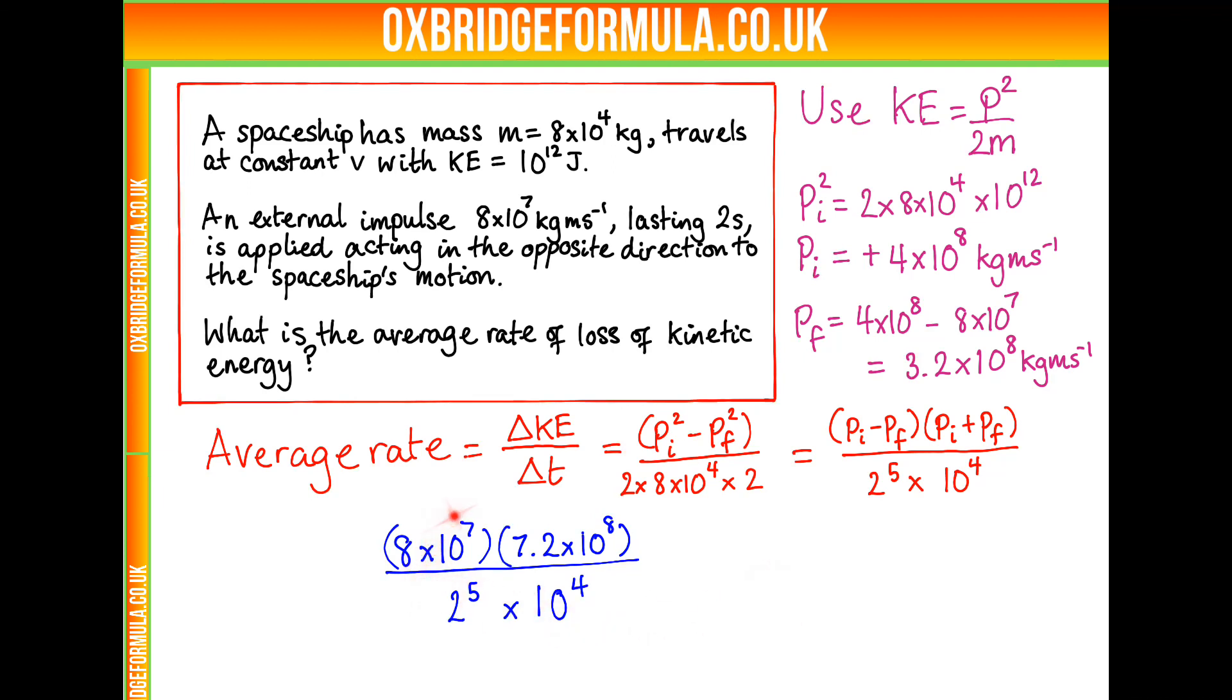So we have 8 times 10 to the 7, because that was the impulse, the p_i minus p_f, and then 7.2 times 10 to the 8 is the 4 and the 3.2 times 10 to the 8. We can cancel the 8 and 2 to the power of 3, so we get left with 2 to the power of 2 here. Then we get left with 10 to the 4 on the top. So what we have is 10 to the 11 on the top, because of the 10 to the 7 as well, and the 7.2 divided by 4, which is 1.8. So we have an expression of 1.8 times 10 to the 11 watts for the average rate of loss of kinetic energy.